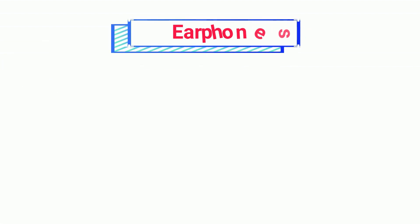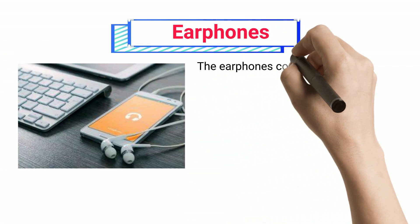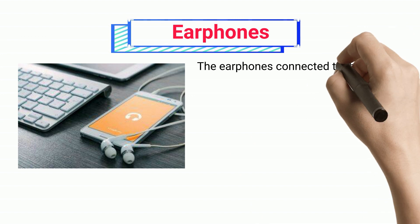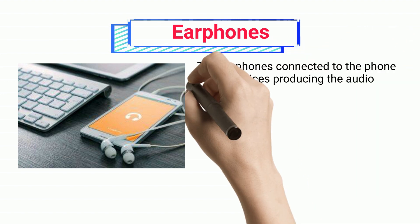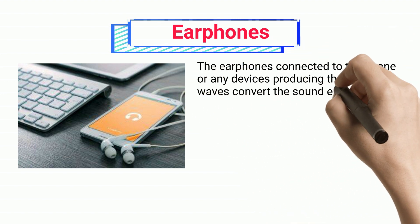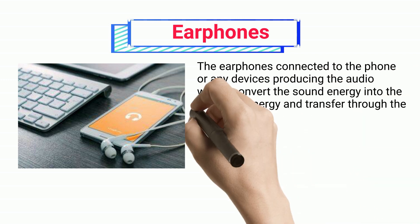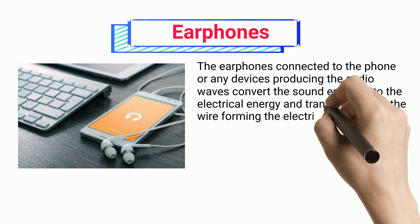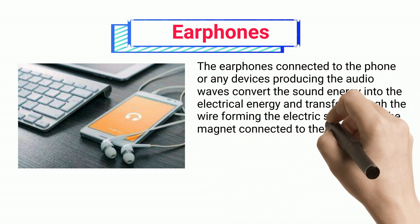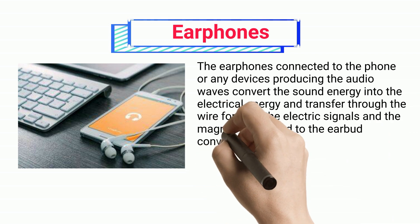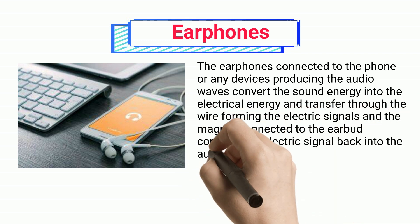Earphones. The earphones connected to the phone or any device producing audio waves convert the sound energy into electrical energy and transfer it through the wire forming electric signals. The magnet connected to the earbud converts the electric signal back into audio waves.